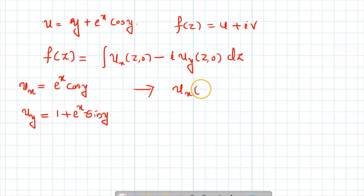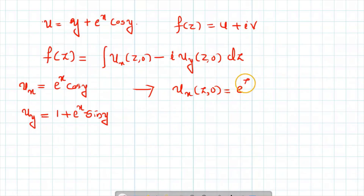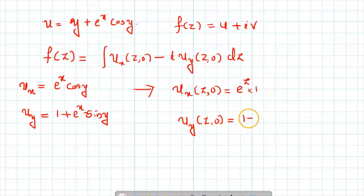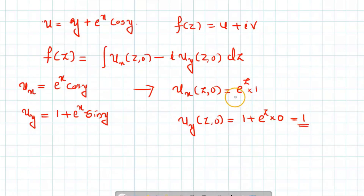Now uy with respect to y: the derivative of y is 1, plus e raised to x (which is constant) times the derivative of cos y, which is minus sin y. So uy equals 1 minus e raised to x sin y. Now we evaluate ux at z₀: put x equal to z and y equal to zero, giving e raised to z times cos zero, which is e raised to z. For uy at z₀: we get 1 plus e raised to z times sin zero, which equals 1.